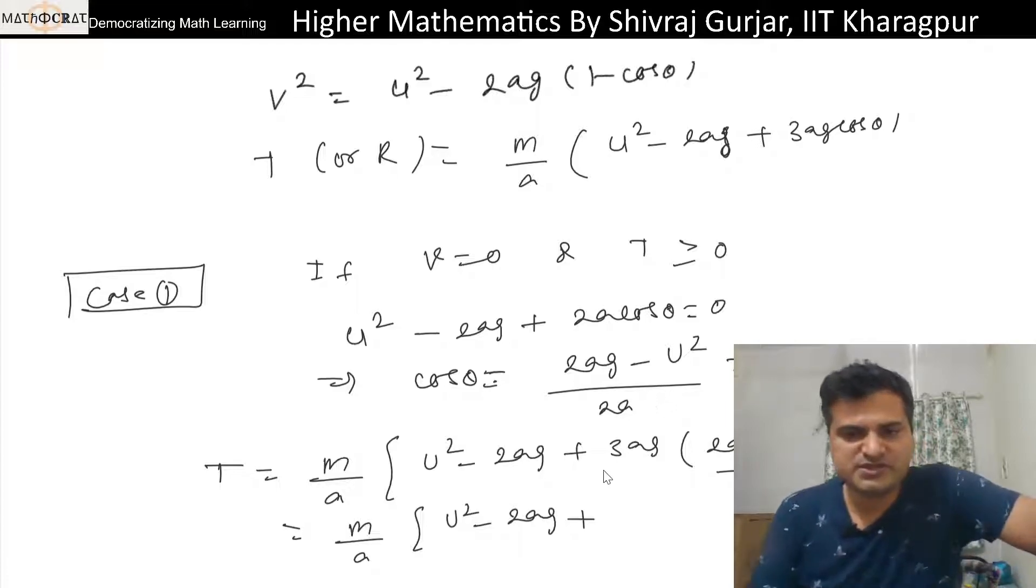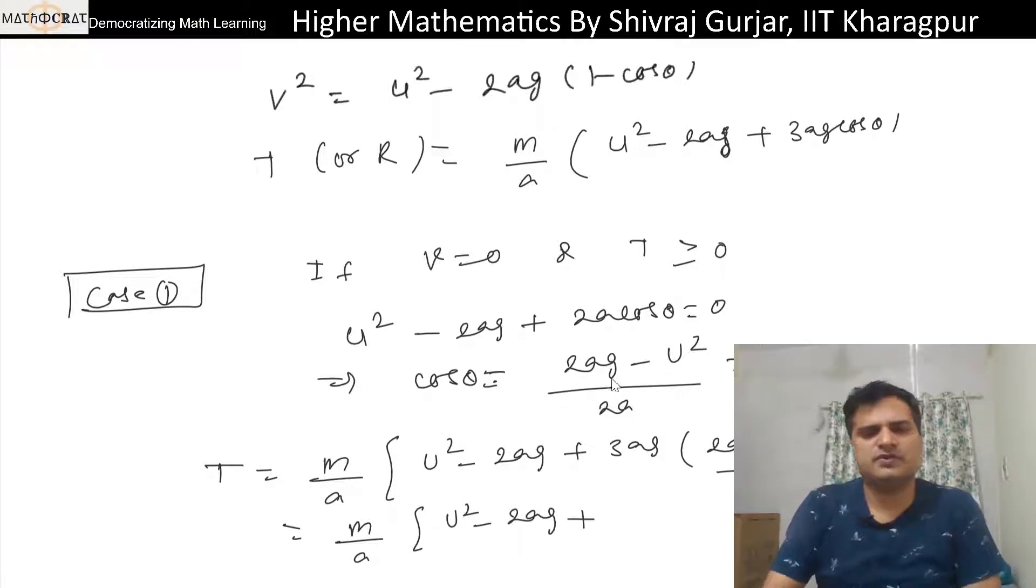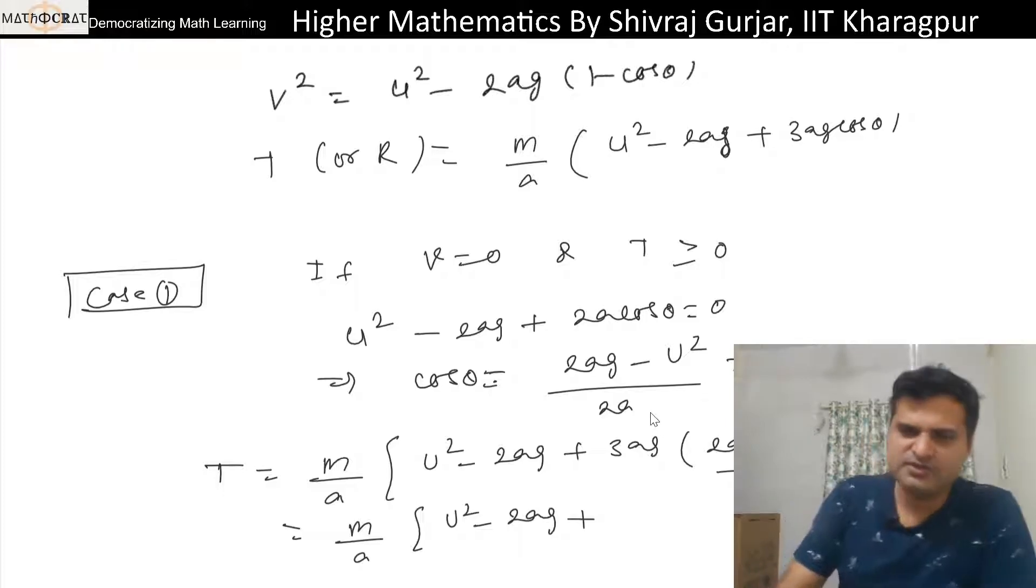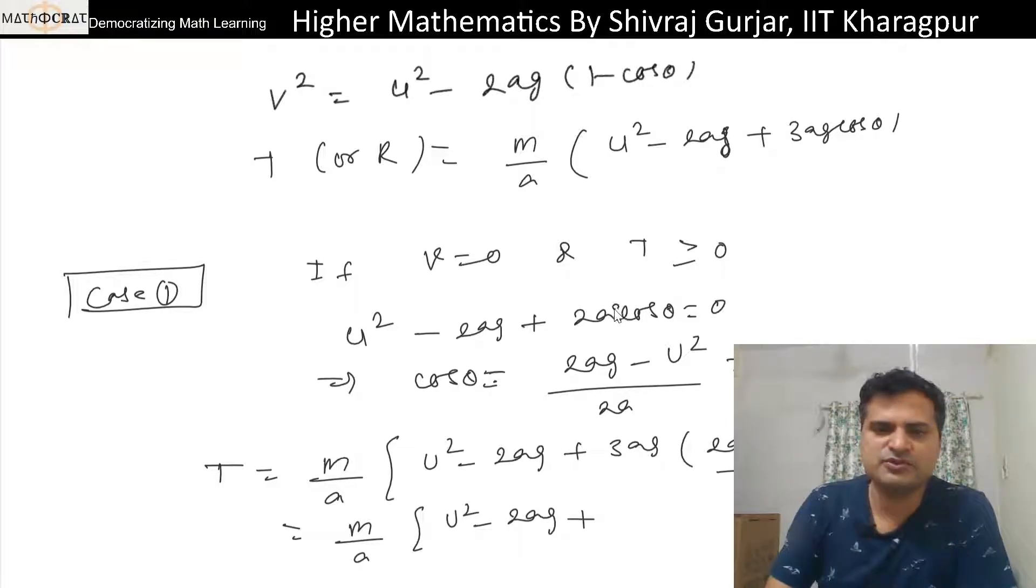We have made some mistake here. Oh, if this is 0. So, okay, 2az - u² divided by 2az plus 2az - u².